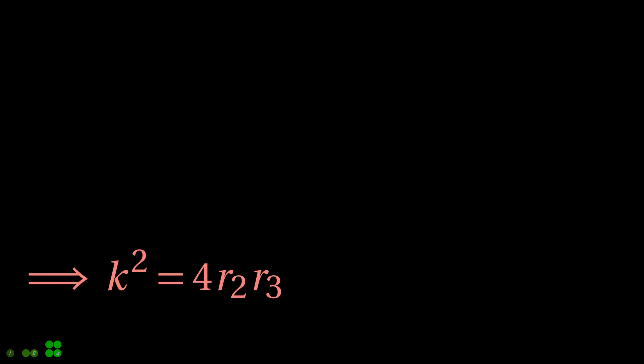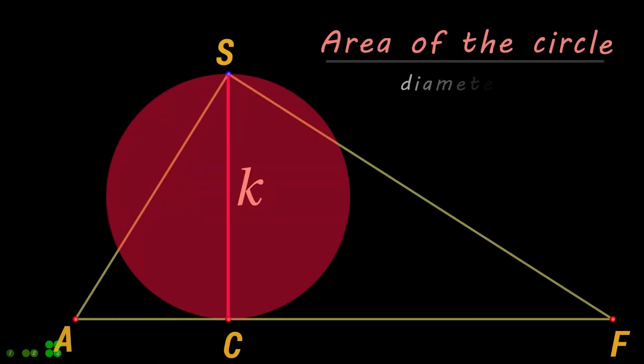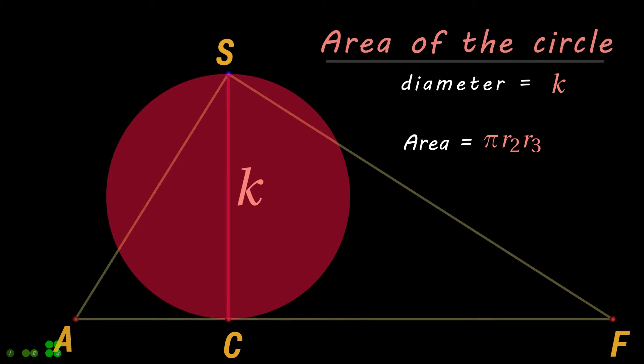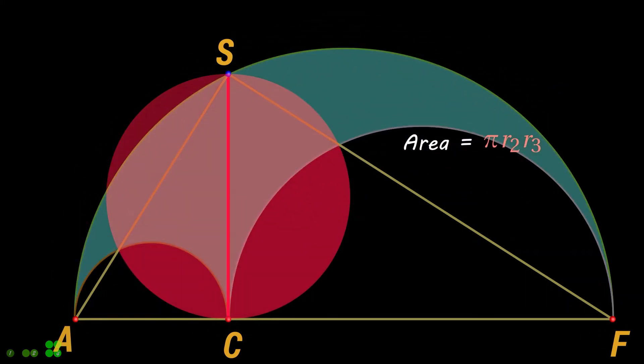Now let's substitute this value in the equation for the area of the circle. This proves that the area of this circle is the same as the area of the Arbelos.